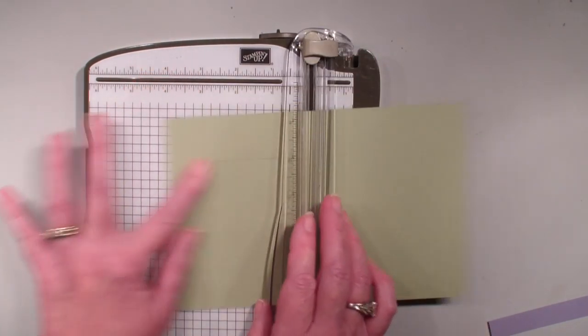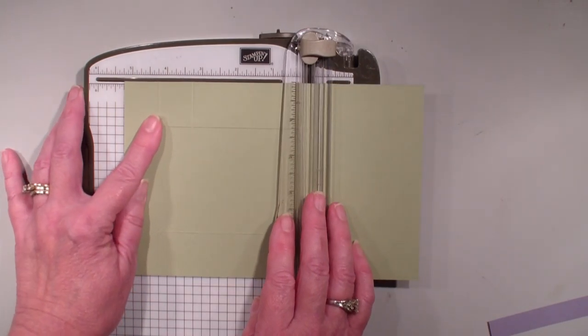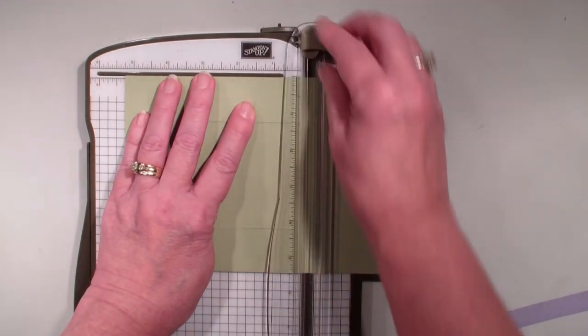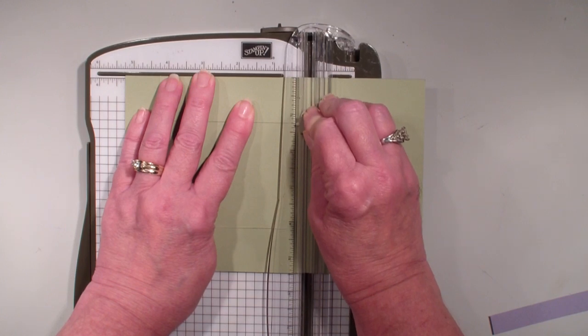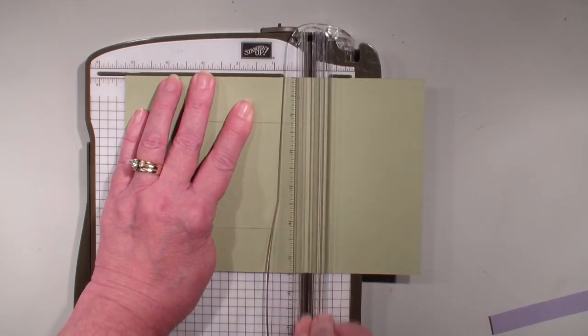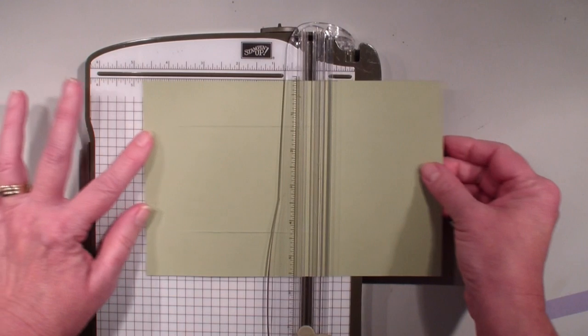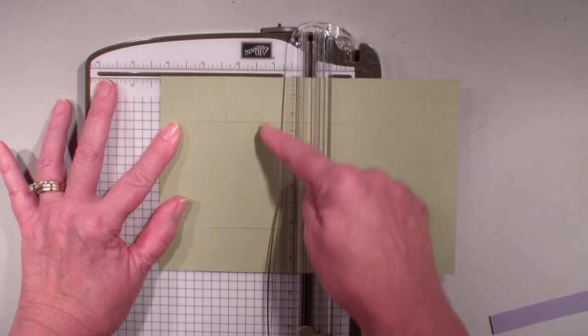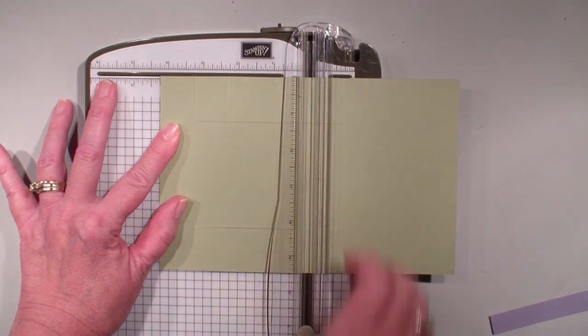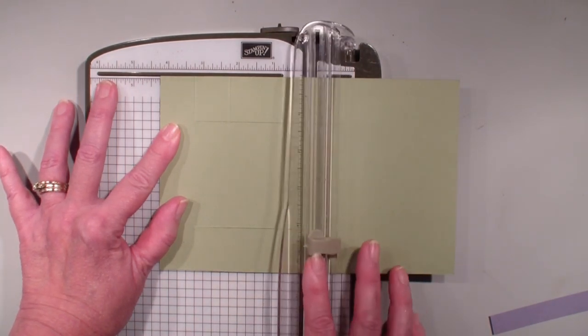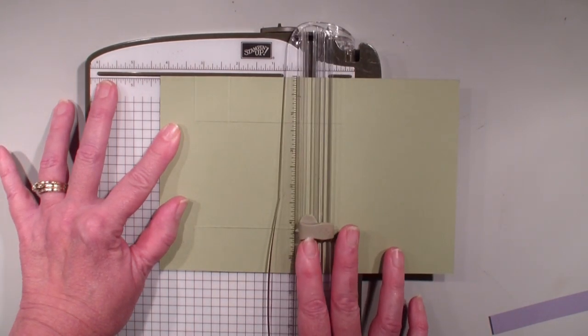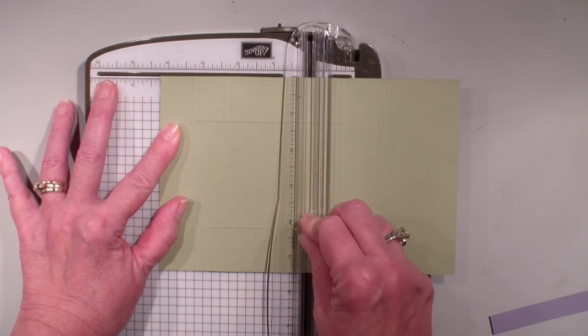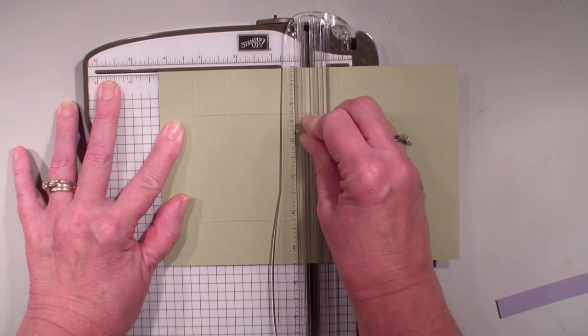Next I'm going to go in and score at 5¼. Once again, edge of the paper to the cut line, cut line to the edge of the paper. I'm going to pull it back and line it up at the 4¼. This time I'm going to score between the two cut lines. So I'm going to bring that scoring blade in, line it up to the cut line, and move to the end.